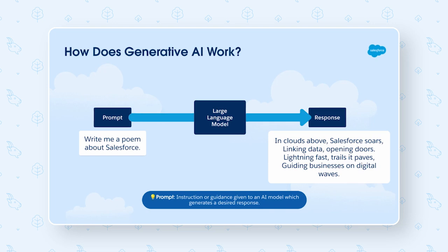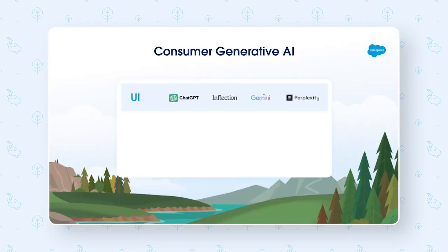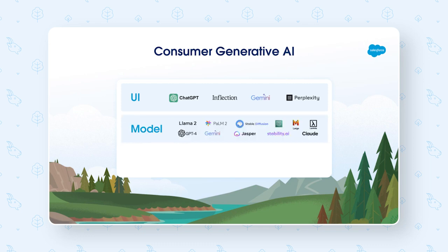Now, there are many consumer apps that are doing this today, and many of you have likely experimented with AI where data is being pulled from public sources online. Consumer generative AI, like ChatGPT for example, has three components: the UI — usually in the form of a web-based chat experience where you type in your prompts in natural language and get your output — the model, which is our large language model, and data. With public models, that data is coming from the internet, from places like media companies and Reddit and even more.